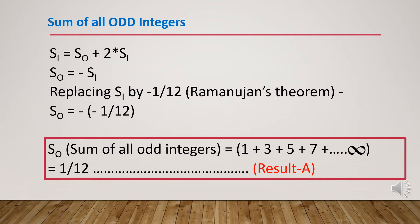From the previous slide, SI equals SO plus 2·SI. Rearranging, we get SO equals minus SI. Replacing SI with minus 1/12 (Ramanujan's theorem), we get SO equals minus of minus 1/12. So the inference is: SO, the sum of all odd integers — 1 plus 3 plus 5 plus 7, etc., up to infinity — equals 1/12. This is Result A.